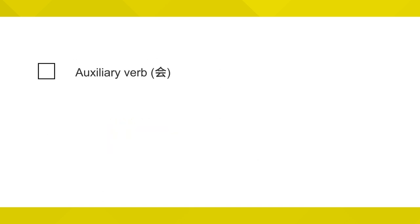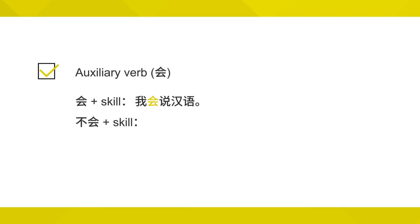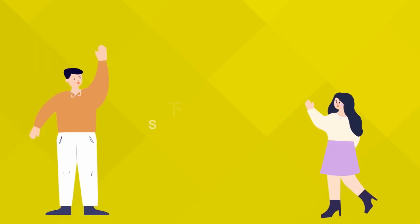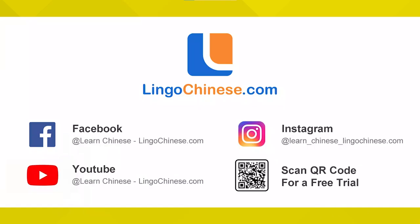Today we've learned the auxiliary verb 会。 会 plus a skill. For example, 我会说汉语。 We also learned its negative form, 不会。 For example, 我不会游泳。 That's all for today. Thanks for listening and see you next time. 下次再见。